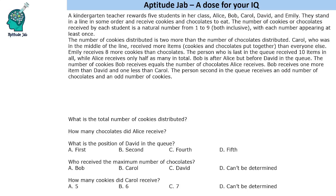Hello everyone, welcome to Aptitude Jab. This set says that a kindergarten teacher rewards five students in her class. They stand in a line in some order and receive cookies and chocolates to eat. The number of cookies or chocolates received by each student is a natural number from one to nine, both inclusive, with each number appearing at least once.